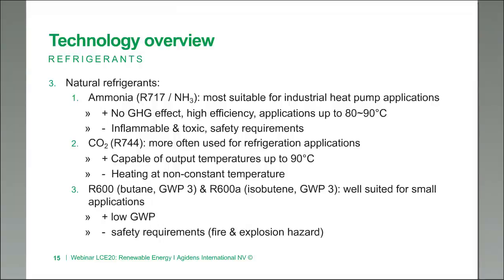An alternative to ammonia is CO2 itself, R744, which is used a lot in refrigeration applications and is also capable of output temperatures up to 90 degrees. The disadvantage in heating applications is that it doesn't heat at a constant temperature. Yet another alternative natural refrigerant is R600 or butane, with a global warming potential of just 3, and R600A isobutane, also with a GWP of 3. These are refrigerants well suited for small applications. The advantage is low global warming potential, but butane is very easy to catch fire and can even create an explosion hazard, requiring significant safety measures.